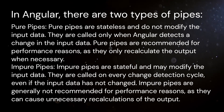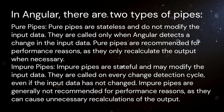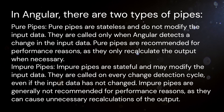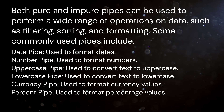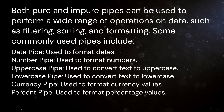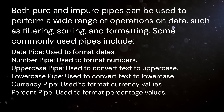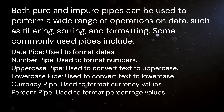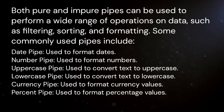Impure pipes are generally not recommended for performance reasons as they can cause unnecessary recalculations of the output. Both pure and impure pipes can be used to perform a wide range of operations on data such as filtering, sorting, and formatting.